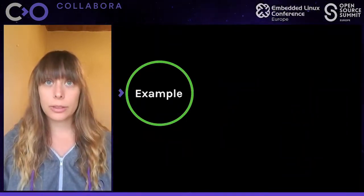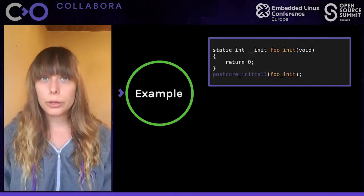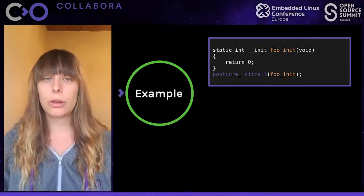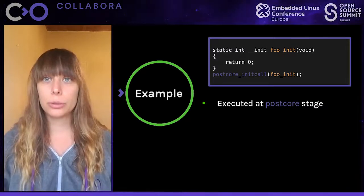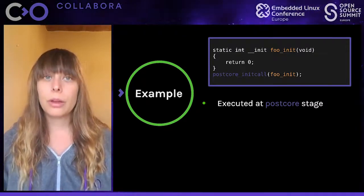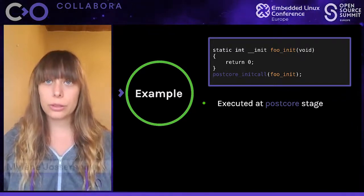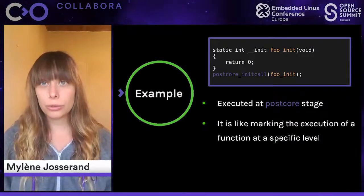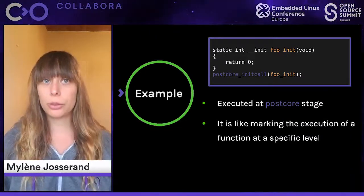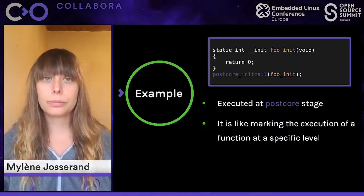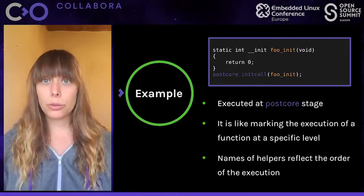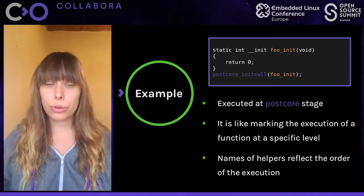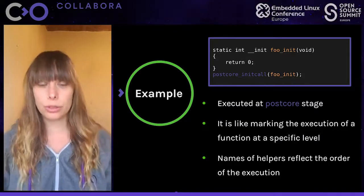Let's see an example. We create a simple function, foo_init, that is just returning zero. For this example, we declare it using the postcore_initcall helper. Thanks to that, this foo_init function will be executed at the post-core stage. In fact, using init calls is like marking the execution of a function at a specific level of your kernel boot. That's why the names of the helpers try to reflect the order of execution — for example, postcore_initcall functions will be called after core_initcall ones.